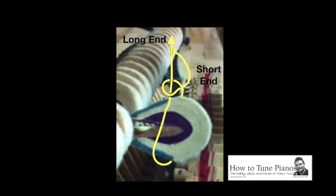Take it out, make it go underneath the long end, come around, over the long end, and through the loop.